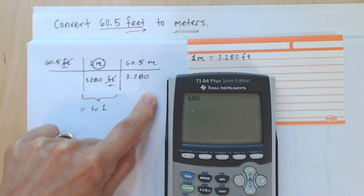I'll go ahead and write 60.5 divided by 3.28. Don't need to type in the zero. Enter.